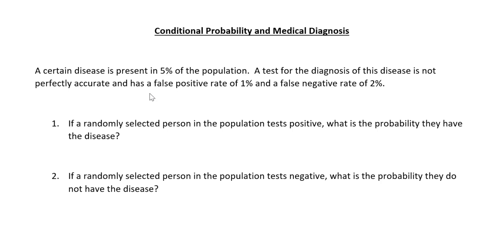It says a certain disease is present in 5% of the population — 5 out of every 100 have this particular disease. And then the test that would diagnose whether somebody actually has it isn't even 100% perfectly accurate. So when you say false positive, what that means is that you tested positive but it's actually wrong — you don't even really have it. That's terrible, but that can happen.